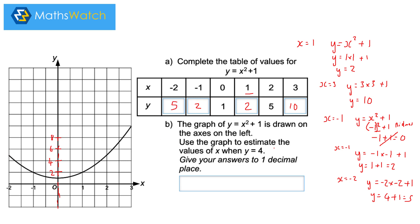They sometimes ask you to use your graph to estimate values of x when y equals 4 — you must use the graph, not just substitute. Draw a dotted line at y equals 4. Quadratics can have two estimates. You can see they intersect at two points; that's approximately 1.7 or 1.8, so I'll say 1.7. On the other side, it's symmetrical at zero, so that's about minus 1.7.